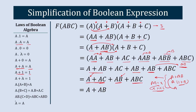This term simplifies to A, and this entire term simplifies to A·B. Then applying the same rule again, A + A·B simplifies to A. So the final simplified version of this equation is just A — whatever input we give as A, the same will be the output.